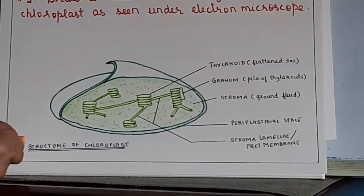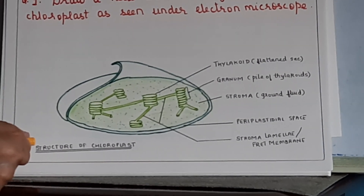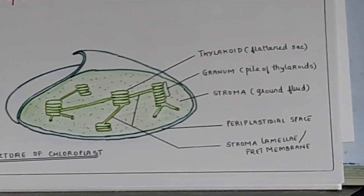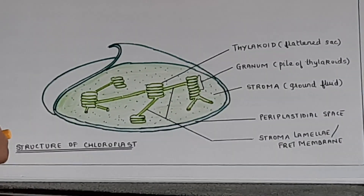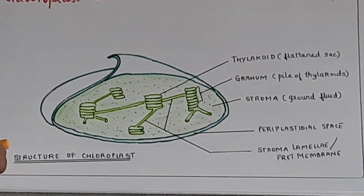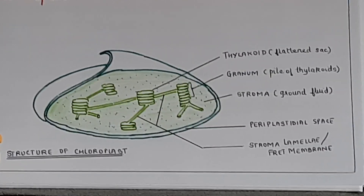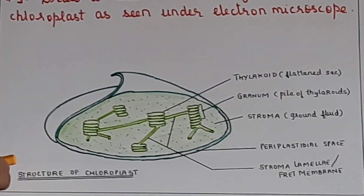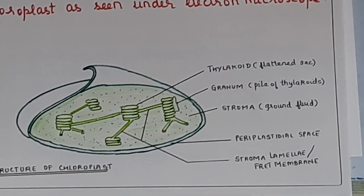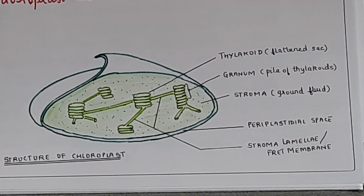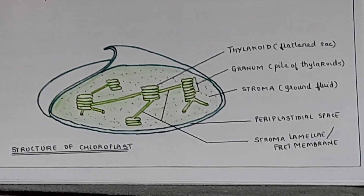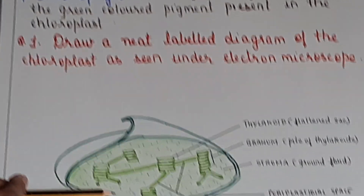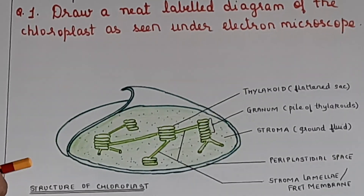The location of the chloroplast is important: they are located in the palisade and spongy mesophyll of the leaf and in the guard cells surrounding the stoma. The location of chlorophyll is also important: it is present in the walls of the thylakoid in the chloroplast of the leaf. You cannot just write 'chlorophyll in the leaf' — you need to specify the thylakoid. The diagram of the chloroplast as seen under electron microscope is an important diagram.